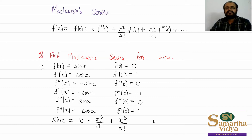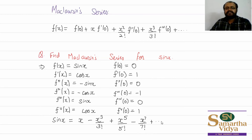You can observe from this pattern that we are only getting odd-degree terms. So the next term will be x⁷/7!, and the signs alternate plus and minus. This is an infinite series. So the Maclaurin series expansion of sin x in terms of x is: x − x³/3! + x⁵/5! − x⁷/7! + ⋯